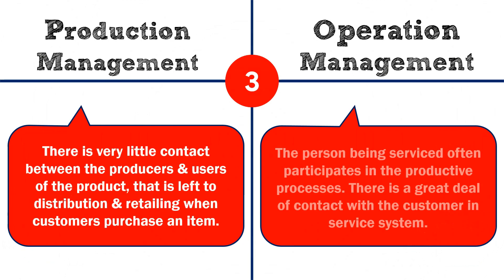The third difference: in production management, there is very little contact between producers and users of the product — that is left to distribution and retailing when a customer purchases an item. Whereas in operation management, the person being serviced often participates in the productive process, and there is a great deal of contact with the customer in the service system.